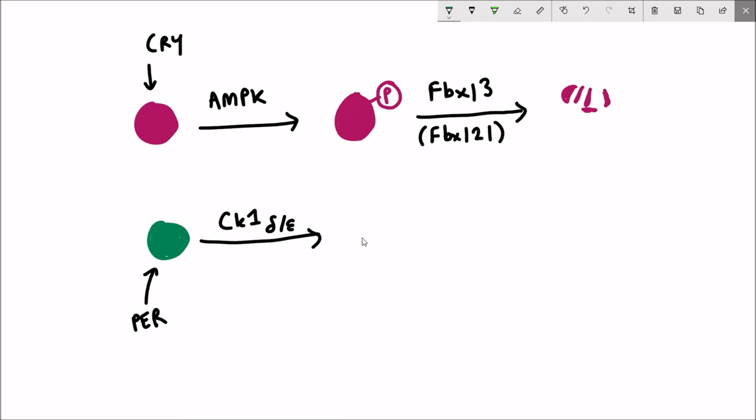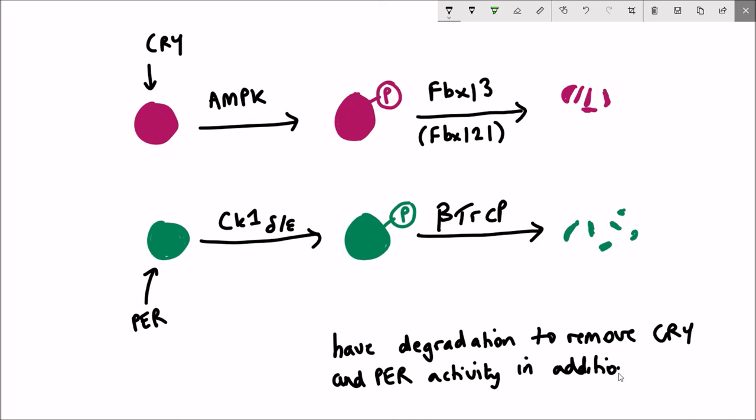Similarly, period also gets phosphorylated, but this time by the protein CK1 delta or epsilon. The additional phosphate enables it to be recognized by the beta-TRCP protein, which then causes period to be degraded as well.